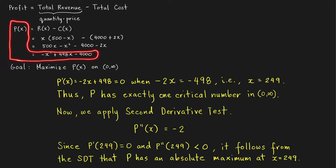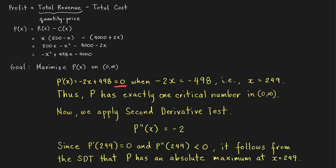Critical numbers are elements of the domain where the derivative is either 0 or does not exist. We compute the derivative: P'(X) = negative 2X plus 498. Since this is a polynomial and always exists, to find critical numbers we equate this derivative to 0. We get negative 2X equals negative 498, so dividing both sides by negative 2, we get X equals 249. Therefore, the profit function has exactly one critical number in the open interval (0, infinity).